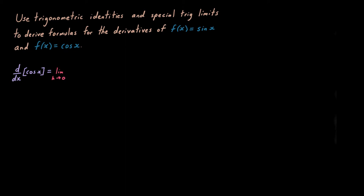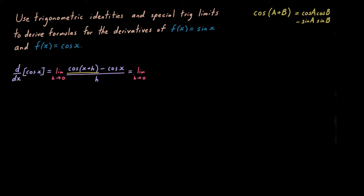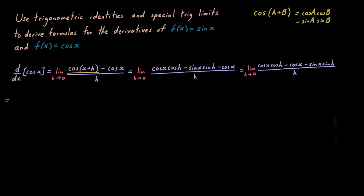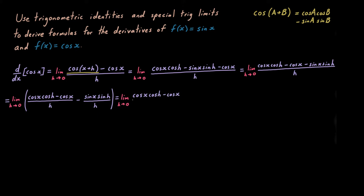Let's start with cosine. The derivative of cosine — let's fall back on our limit definition: cosine of (x+h) minus cosine of x, all over h. That first term, cosine of (x+h), seems unwieldy at first, but I can apply my trig identity, the sum and difference formula, to rewrite that fraction.